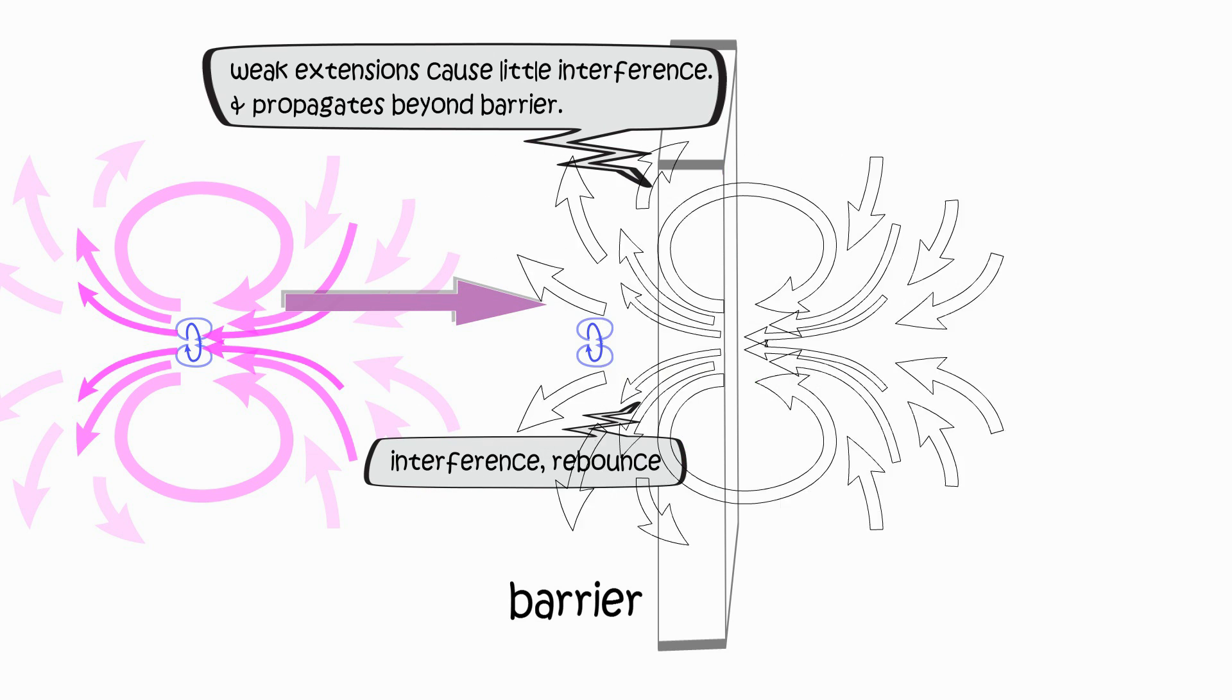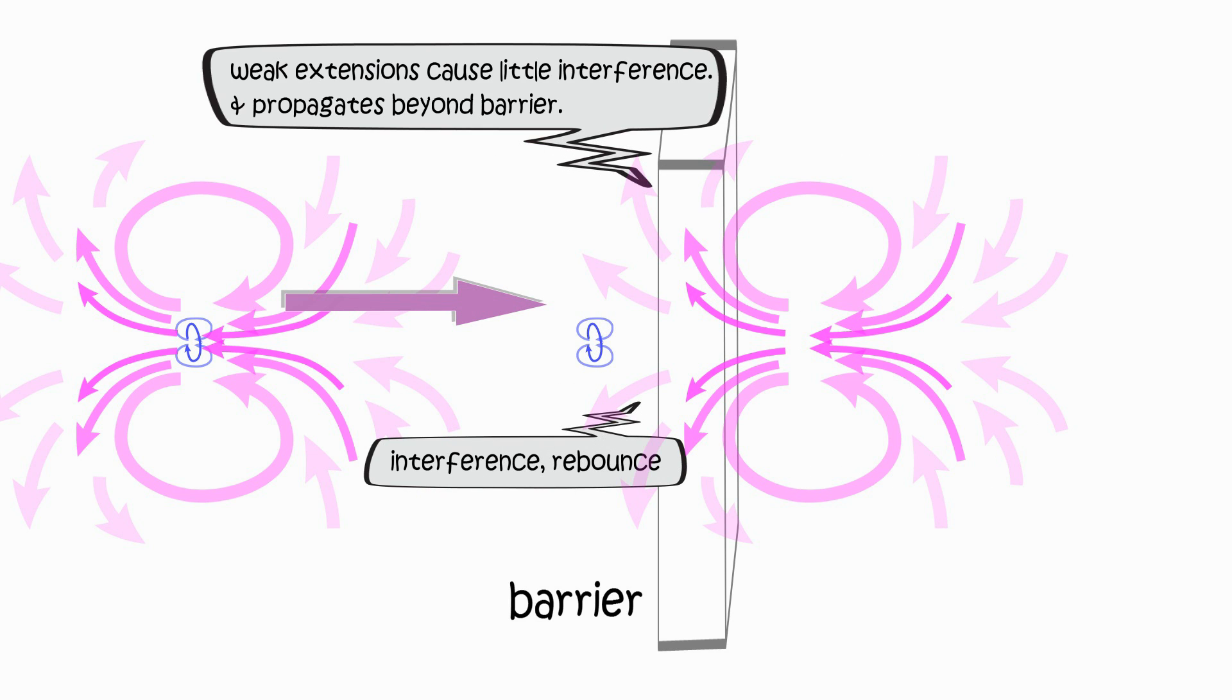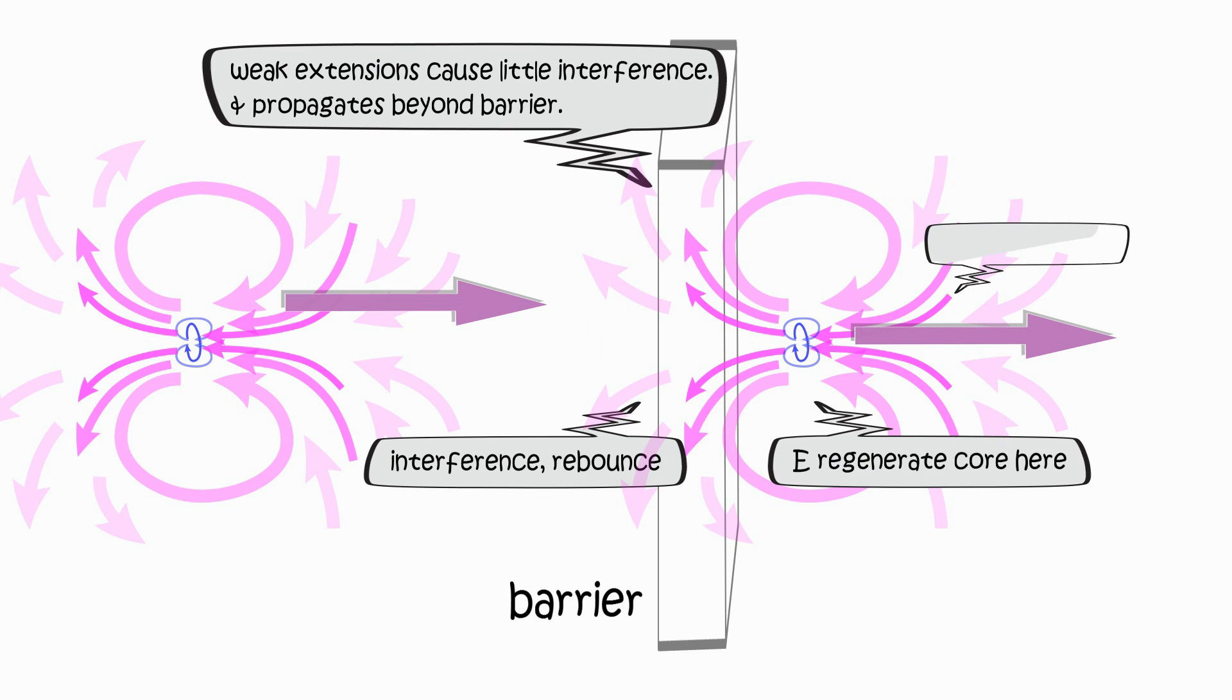But there's a chance electrons' outer extensions can pull its core through the barrier or recreate new core on the opposite side, especially if there's a positive ion on the opposite side.